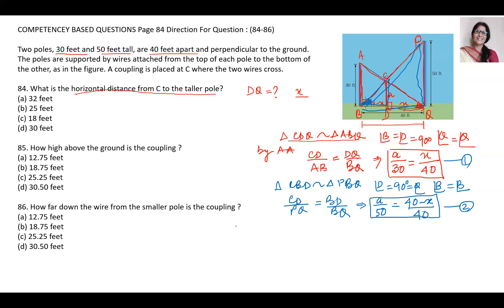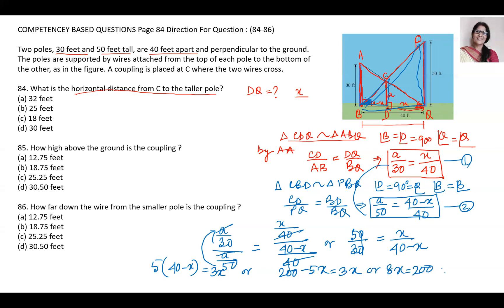Dividing equation one by equation two: H upon 30 divided by H upon 50 equals x by 40 divided by 40 minus x by 40. Canceling, 50 upon 30 equals x upon 40 minus x. Cross multiplying: 5 times 40 minus x equals 3x, or 200 equals 8x. So x equals 200 upon 8, that will be 25 feet.